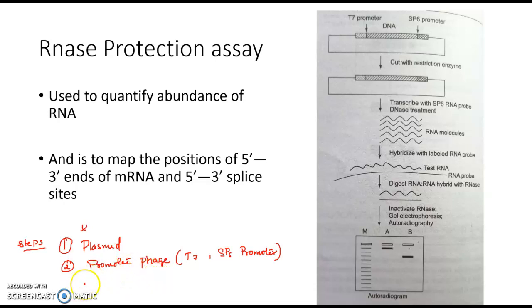A plasmid vector with phage promoter is used to do this RNase protection assay, and the gene of interest, the DNA that is the gene of interest, is inserted inside the plasmid vector. So I will explain with this picture. Here you can see that the first step, we have inserted our target DNA into the plasmid vector. So this DNA is inserted here downstream to the promoter in anti-clockwise direction.